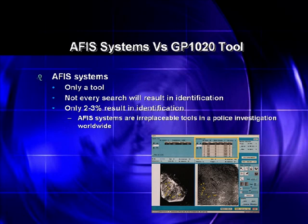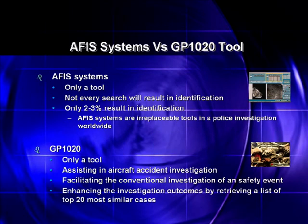It must be addressed that AFIS systems are only a tool used by the latent examiner. Namely, the examiner determines if the latent image is of value, then selects the search criteria and examines the list of candidates produced by the search. At the end, the latent examiner makes the identification. However, not every latent print search will result in identification — actual figures show that only 2–3% of latent print searches will result in identification. Despite the low rate of identification, AFIS systems are irreplaceable tools in a police investigation worldwide. Similarly, GP-1020 is a tool that assists in aircraft accident investigations. The GP-1020 program is designed to facilitate the conventional investigation of an air safety event and enhance the investigation outcomes by retrieving a list of the top 20 most similar cases.